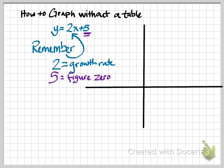Now, how do we start the graph? First, we're going to find figure 0. We always start with our starting point. So we're going to go up to 5 at figure 0, because that's where figure 0 would be graphed.